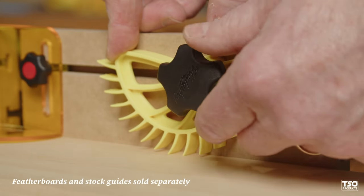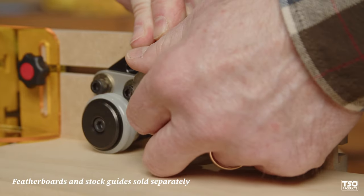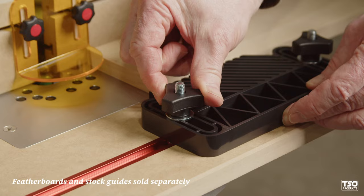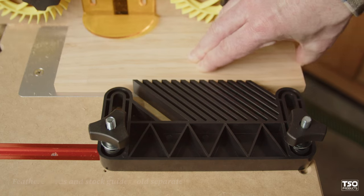Additionally, the sacrificial fence sections in T-Track enable the use of accessories like stock guides and feather boards for even greater control over your work.